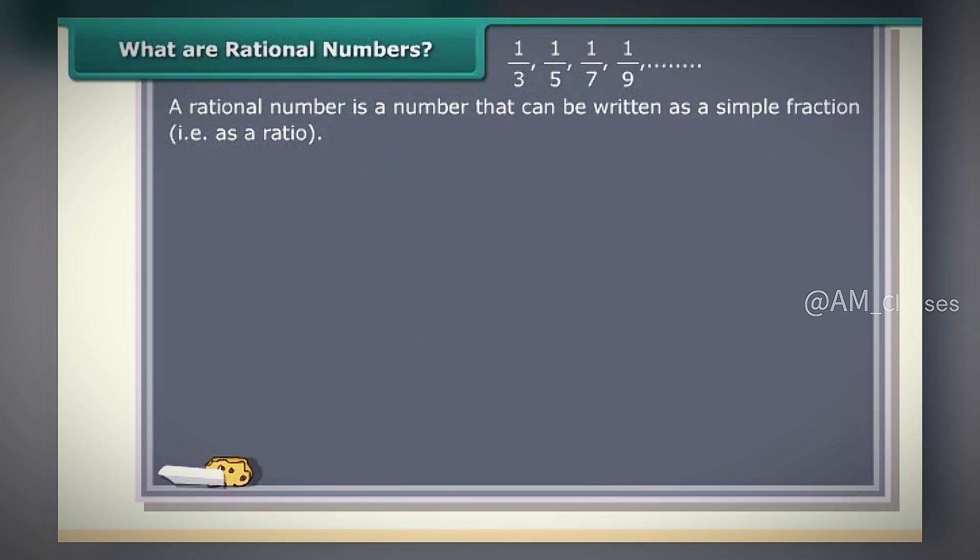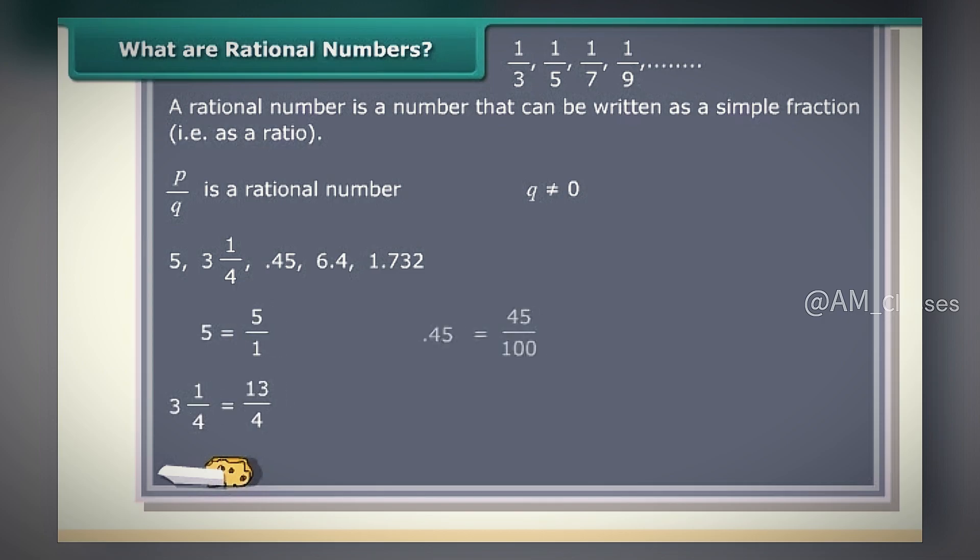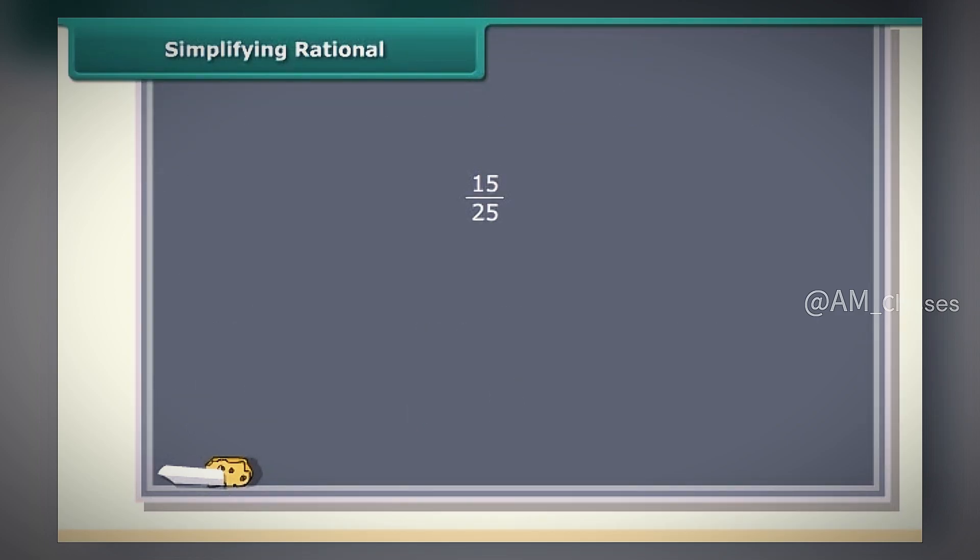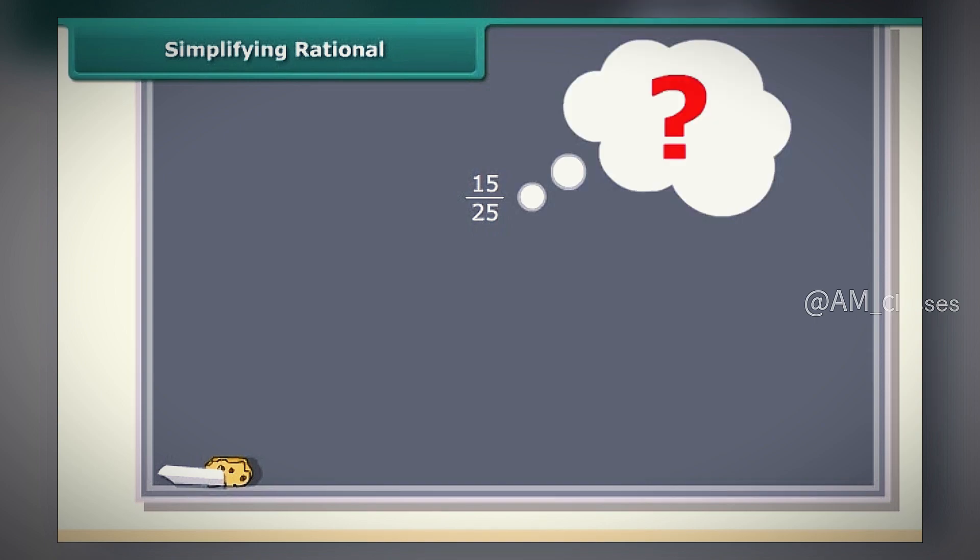A rational number is a number that can be written as a simple fraction, that is, as a ratio. So a rational number looks like this, that is, P upon Q. Remember, Q cannot be equal to 0. Can you tell which of these numbers are rational? Yes, all of them are rational. So rational numbers are simply the numbers of arithmetic. Sometimes the rational number can be like that. Do you think that it is in simplified form? No, it can be further simplified. But how? Here we can divide the numerator and denominator by 5 to get 3 by 5. This is the simplest form. So students, remember, we can simplify the fraction by dividing the numerator and denominator by a common factor.